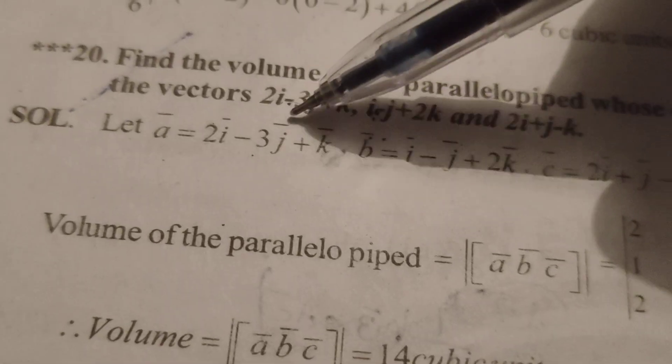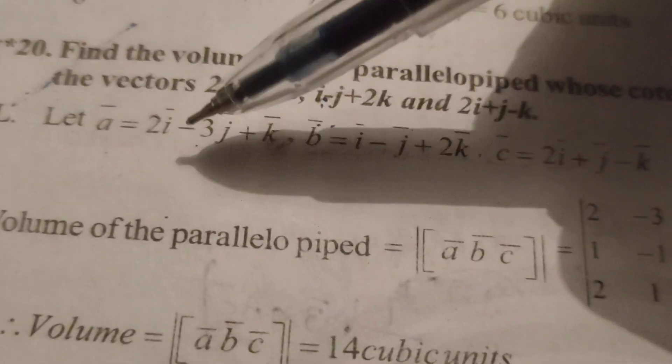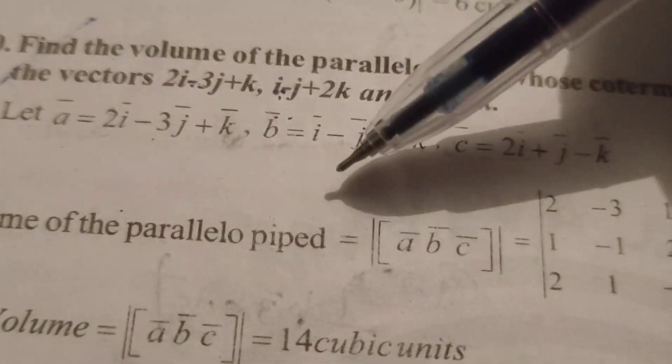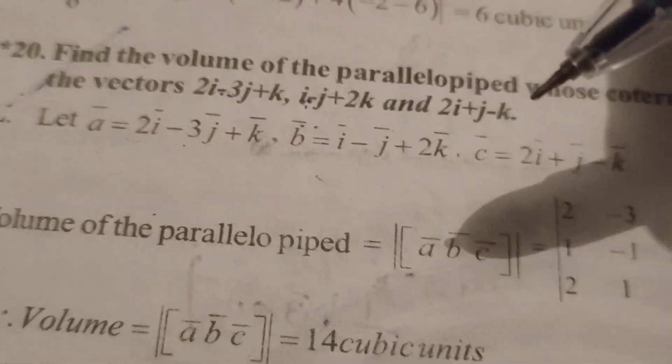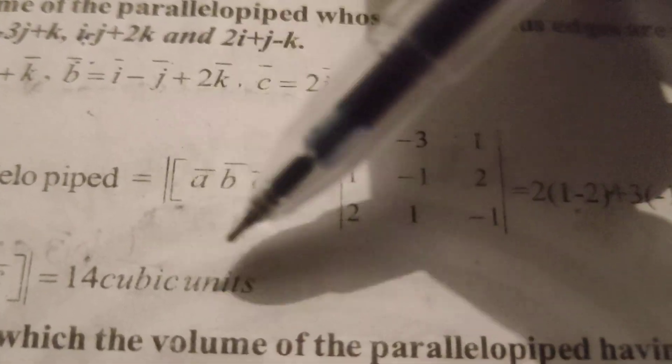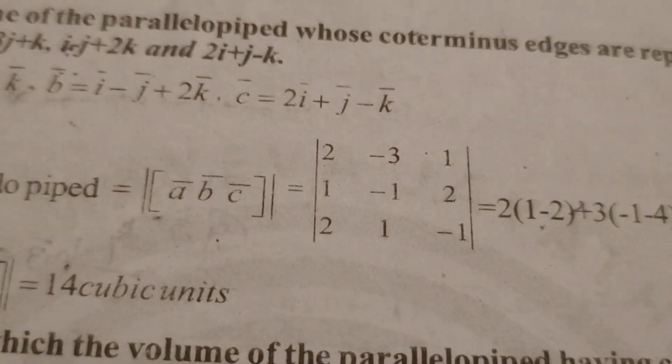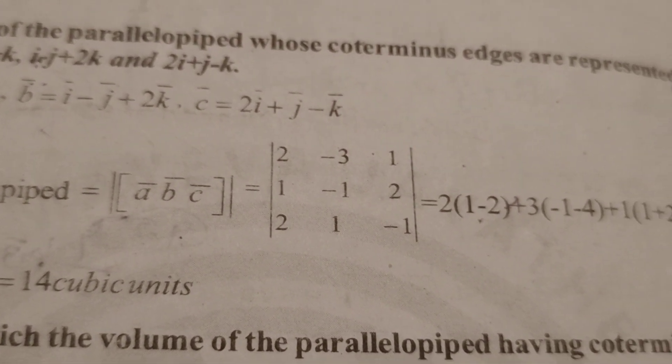Here there are given 3 vectors, considered one by one: a bar, b bar, and c bar. Find out the volume of the parallelepiped using the formula a bar, b bar, c bar. Then find out the determinant of the vectors a bar, b bar, c bar.